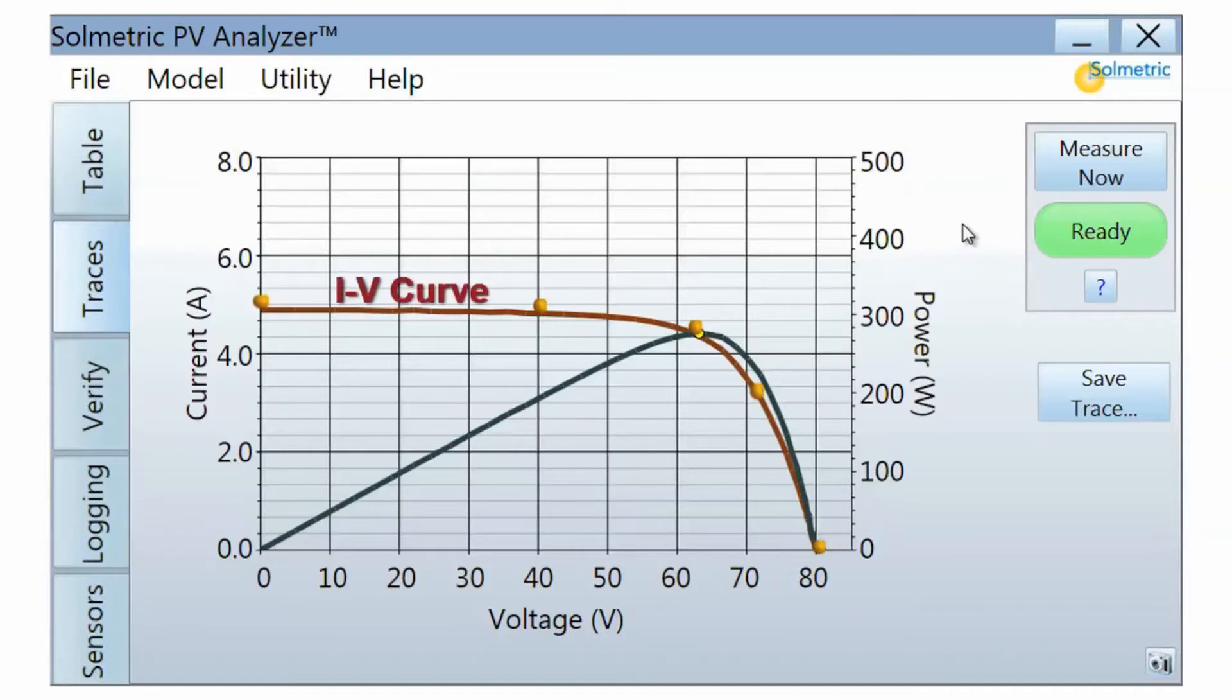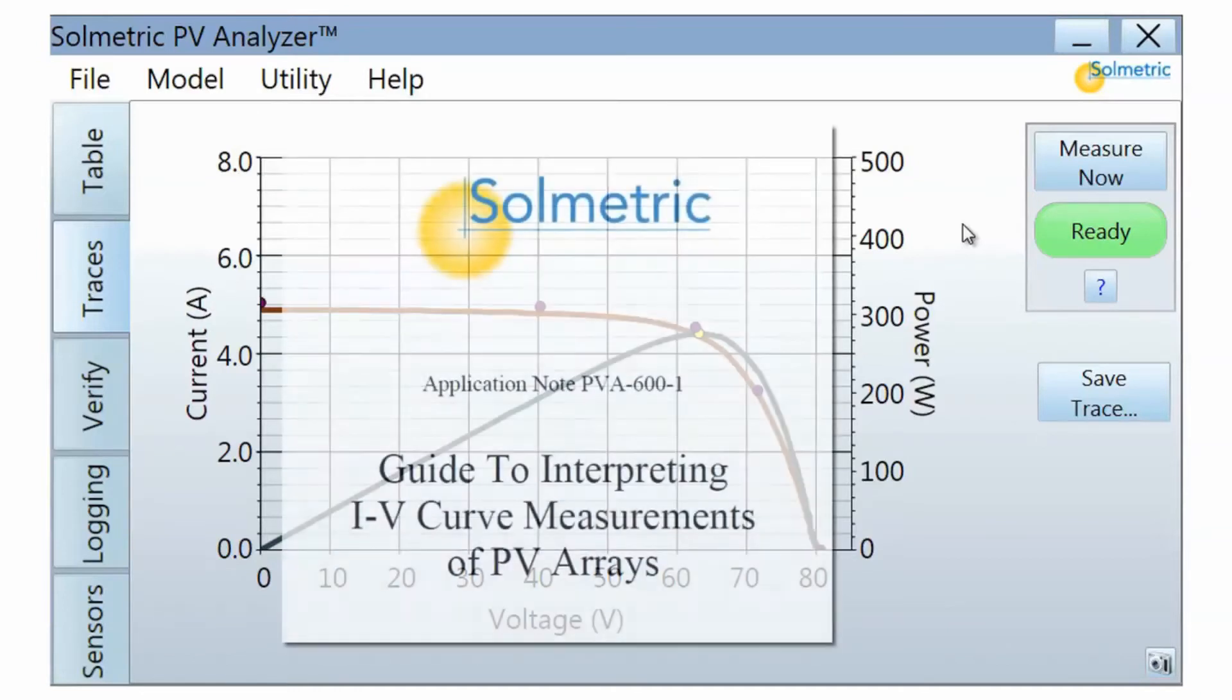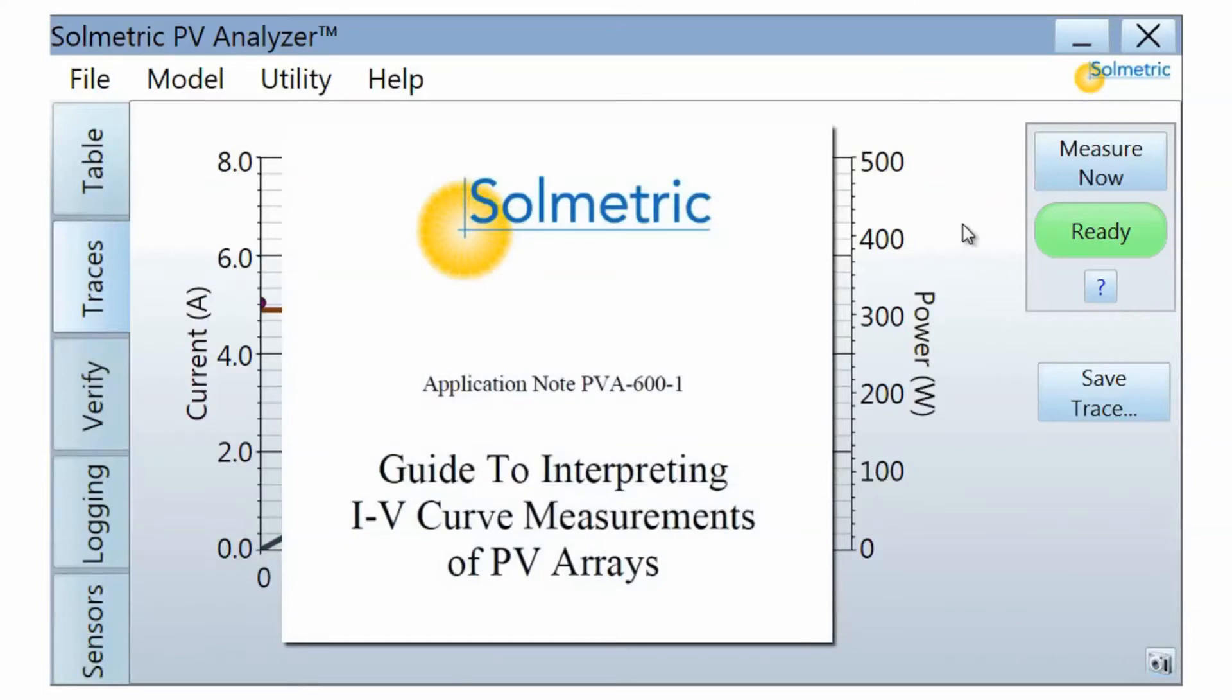An IV curve measurement that fits the predicted curve will have a high performance factor. This indicates a healthy module or string. A curve that differs from the predicted shape most likely has a performance issue. Please consult the Solmetric Guide to Interpreting IV Curves for more detailed information.